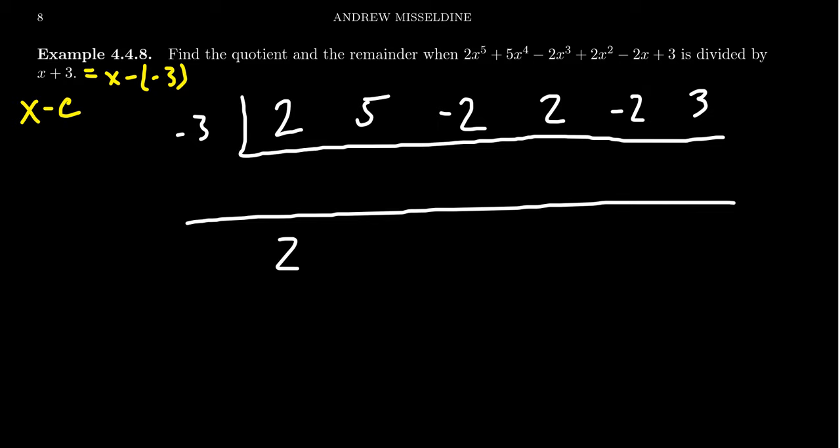2 times negative 3 is negative 6 plus 5 is negative 1. Negative 1 times 3 is 3. 3 minus 2 is 1. 1 times negative 3 is going to be negative 3. 2 minus 3 is going to give us negative 1. Negative 1 times negative 3 is going to be positive 3. Subtract from that 2, we get 1. And then 1 times negative 3 gives us negative 3, which then adds with 3 to give us 0.